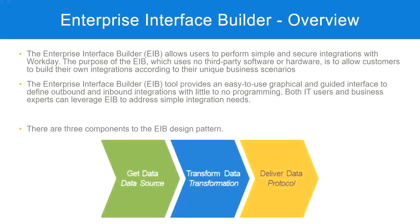When we create an integration using EIB, we will see these three steps as well: get data, transform data, deliver data. These are the three components in an EIB design pattern. We are going to configure each step — where we get the data from, whether we need transformation (if yes, configure it; if no, leave it blank), and how we deliver the data to an external system. Once we configure these three steps, our EIB is ready and we start exchanging information from Workday with an external system.